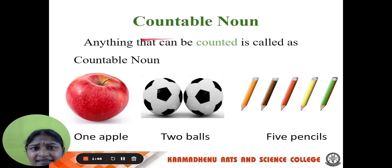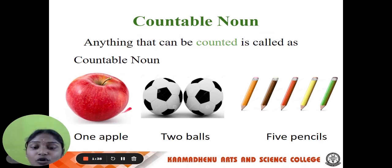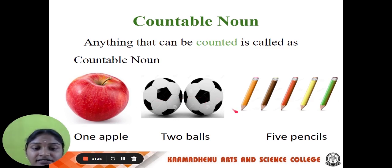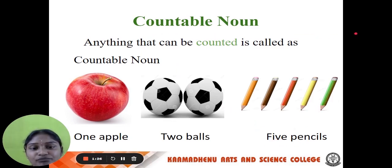Next one, countable noun. Anything that can be counted is called a countable noun. For example, I have given you an apple — there is one apple. How many balls? Two balls — we can count them. How many pencils? One, two, three, four, five — five pencils. Anything that can be counted is called a countable noun.